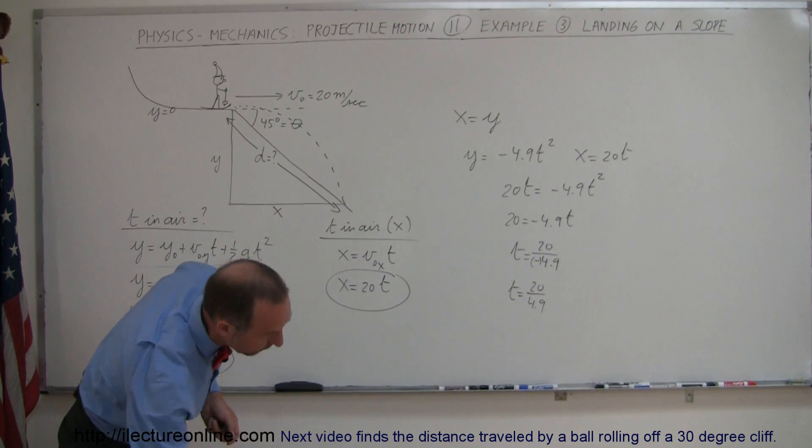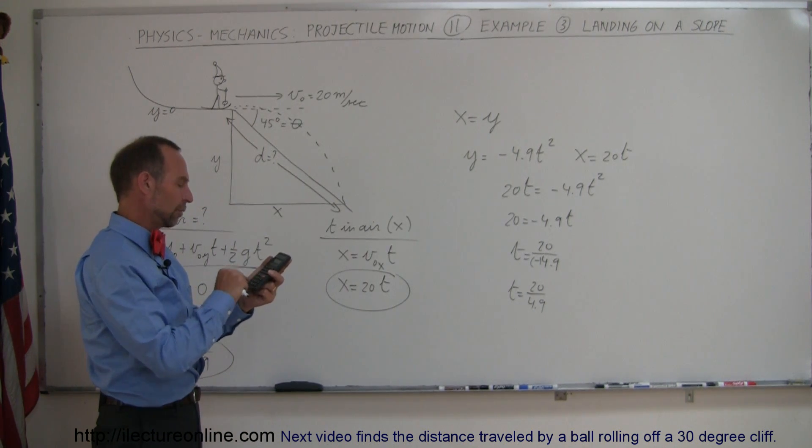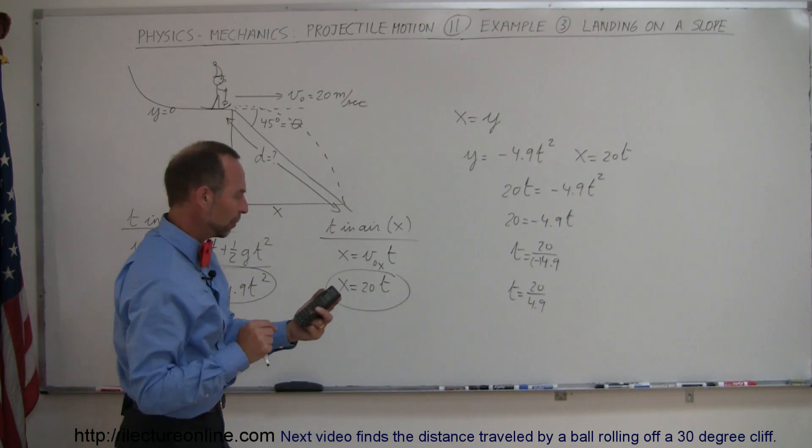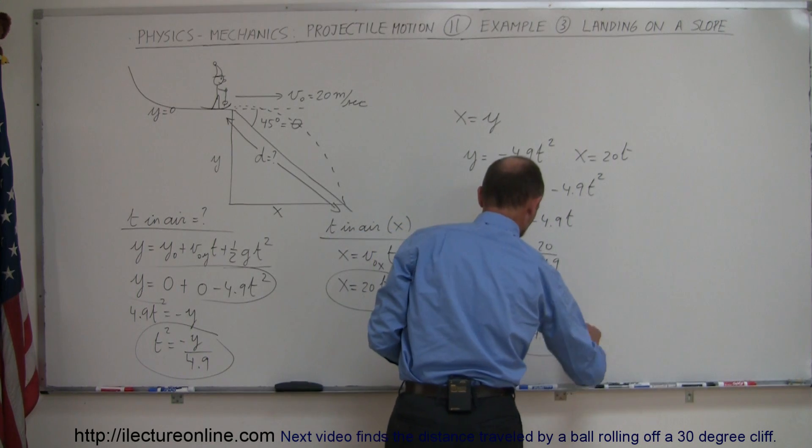and with a calculator, we can find out what it equals. So 20 divided by 4.9, and we get 4.08 seconds.